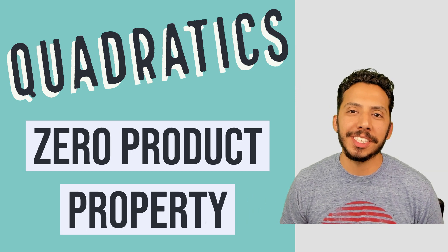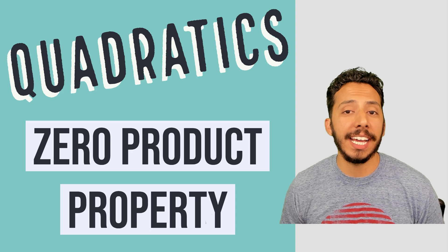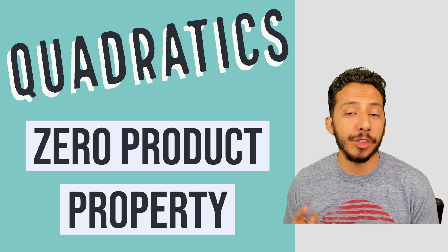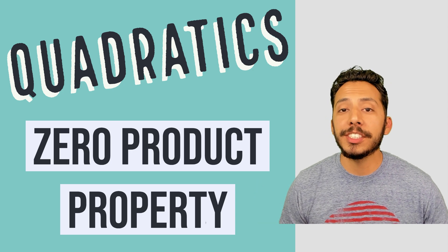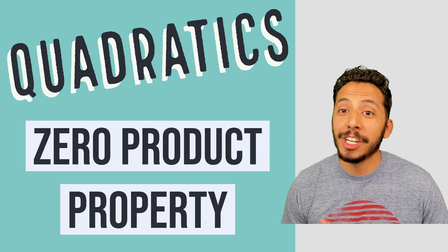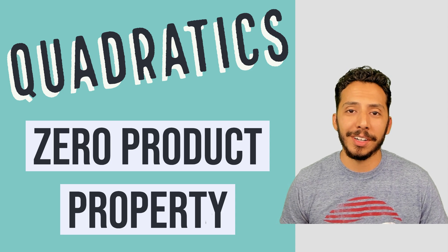Hey everyone, it's that math magician. In this video we're going to take another look at how we can use the zero product property to help us solve a quadratic equation so that we can determine where those x-intercepts are.